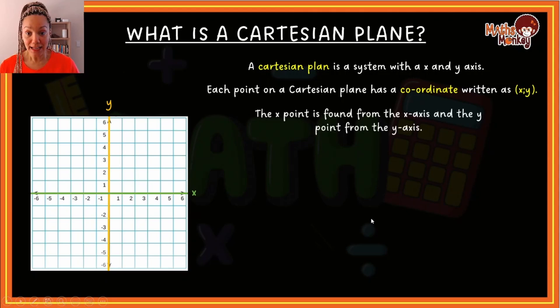The x point is found on the x-axis, which is the green one. And the y point is found on the y-axis, which is the yellow one.